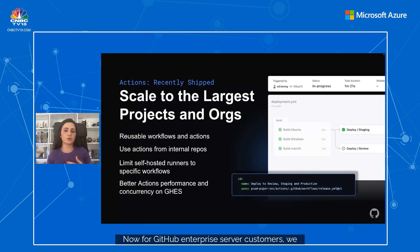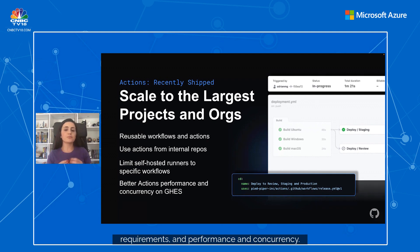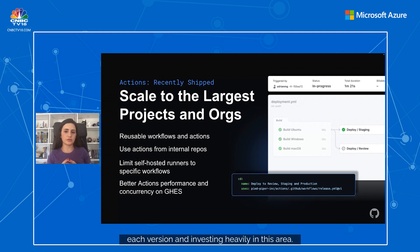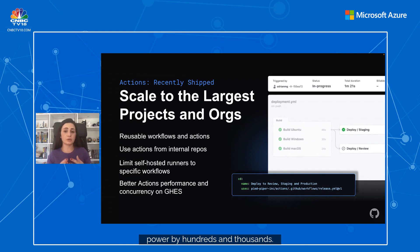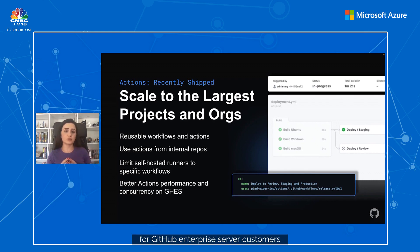For GitHub Enterprise Server customers, we had self-hosted runners giving them access to limit use to meet security requirements, as well as performance and concurrency needs. We've been working to increase these limits with each version, investing heavily in this area — so version by version we're increasing that power by hundreds and thousands. We've invested an incredible amount into concurrency and scalability for GitHub Enterprise Server customers when it comes to Actions.